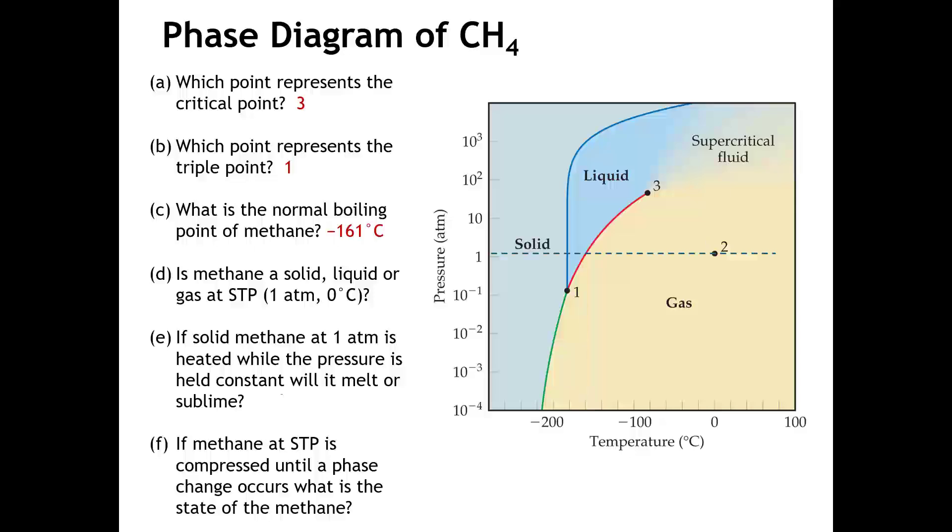The next question that's asked is, what is methane at standard temperature and pressure? One atmosphere and zero degrees Celsius. Well, that's just 0.2 on our graph. And you can see that, in fact, methane would be a gas under those conditions. Actually, methane is the principal component in natural gas. And so from the name, you can kind of infer that it would be a gas.